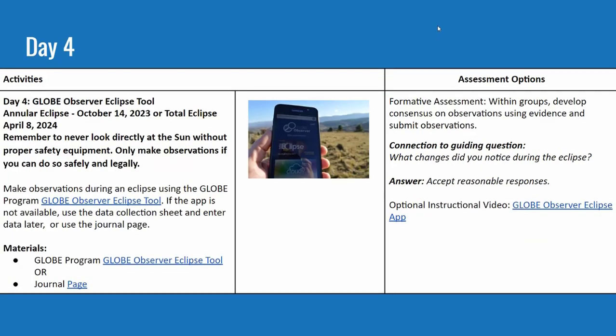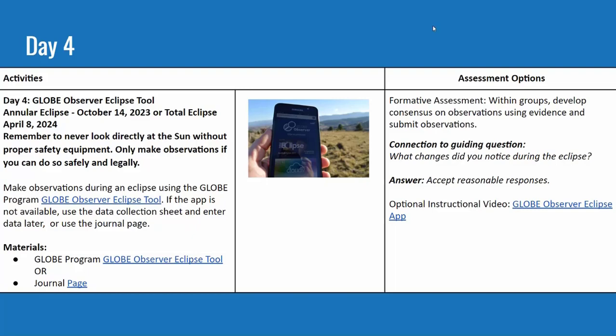On day four, students can use the GLOBE Observer Eclipse Tool. There is a tutorial for how to use it, and a journal page if they do not have a device. The connection to the guiding question is what changes did you notice during the eclipse — and of course that will be different for everyone.